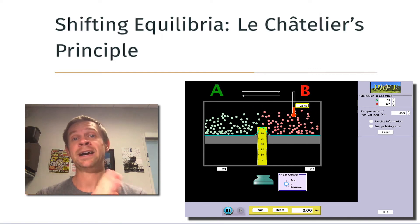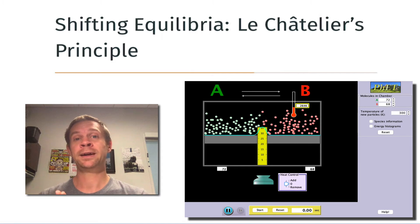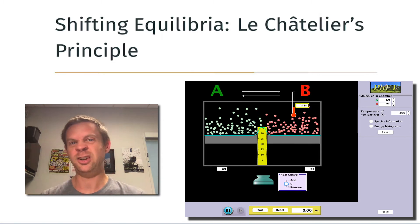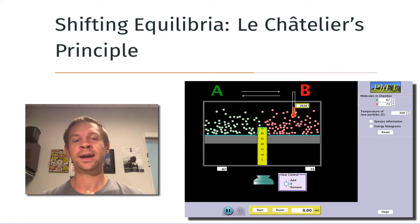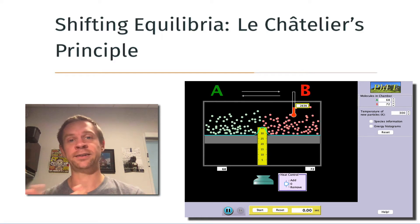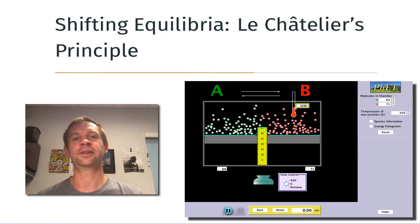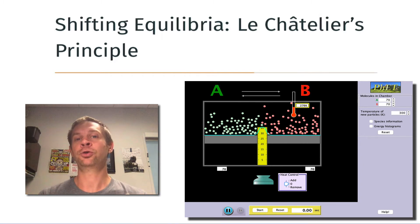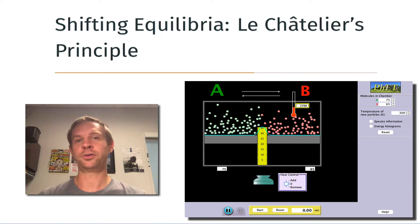...we could drive this equilibrium towards B by intervening in the system, essentially knocking it out of equilibrium in a strategic way, and allowing the dynamic nature of the reaction system to compensate for this stress or intervention. In so doing, the reaction will move in the direction we want it to.